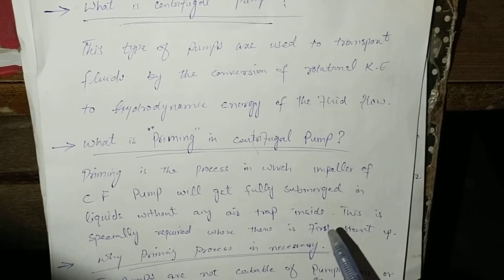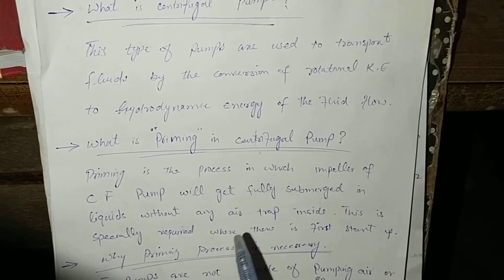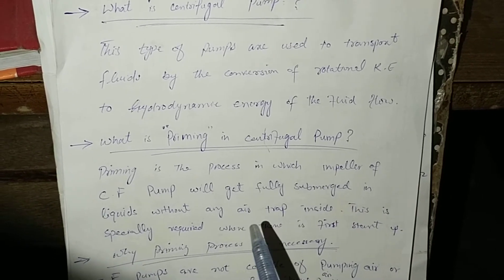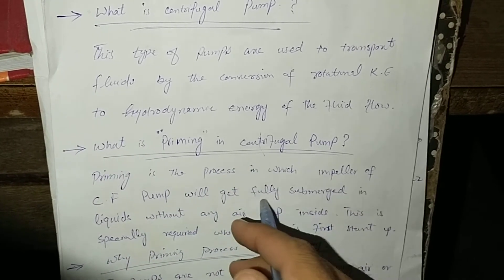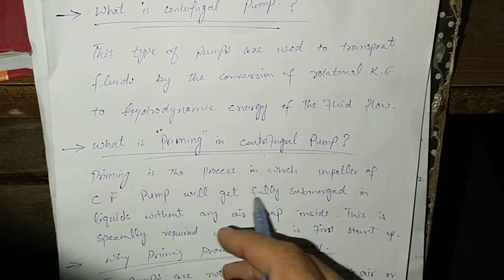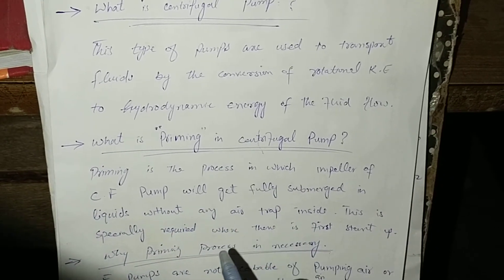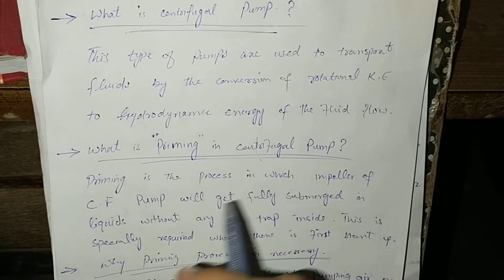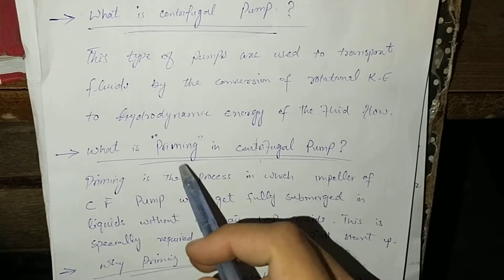The priming process is only necessary for the first startup. When starting the centrifugal pump for the first time, we put water in the casing where the impeller is located, so the impeller gets fully submerged in water with no air trapped inside the casing. This process is called priming.